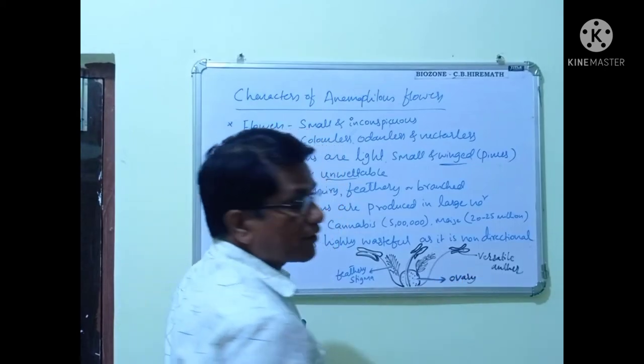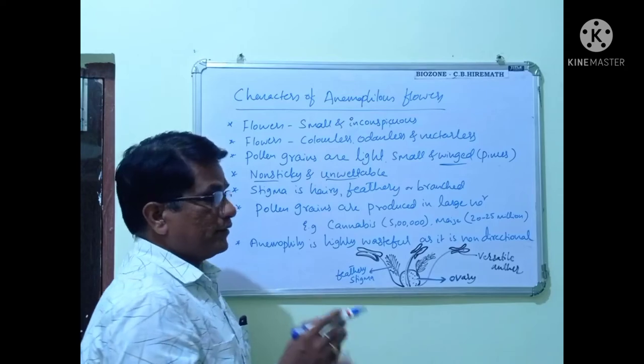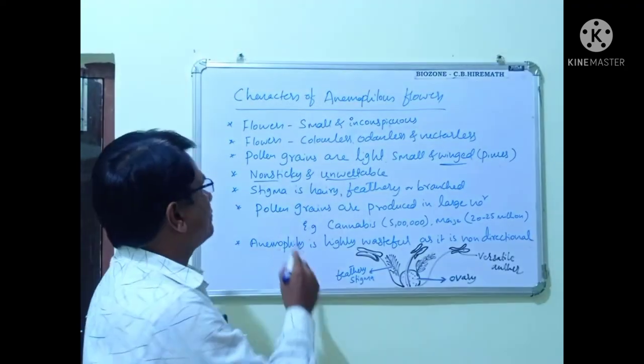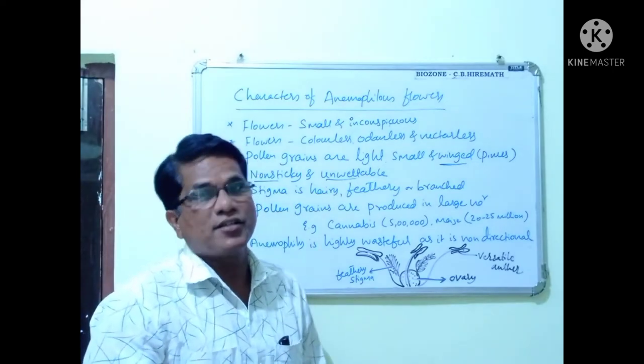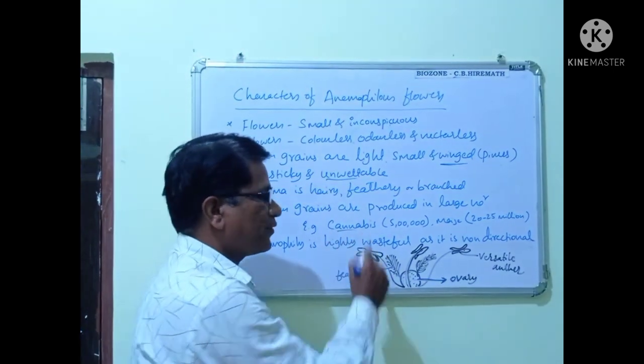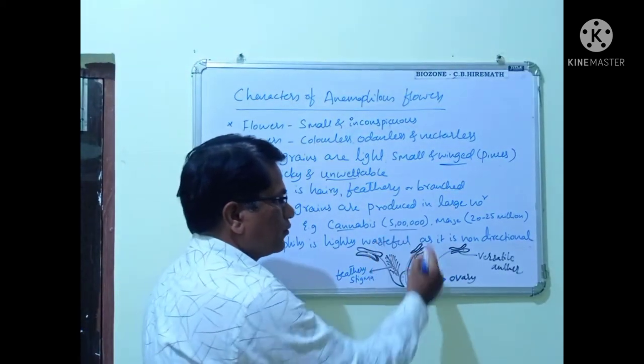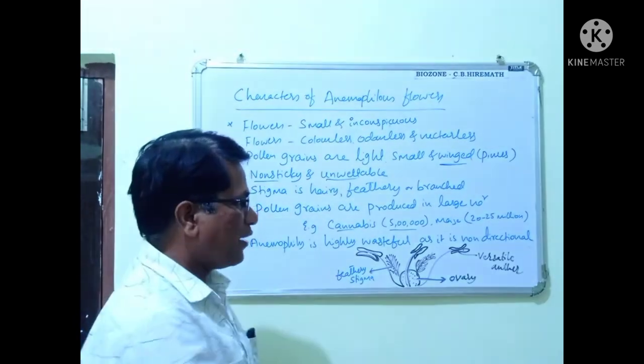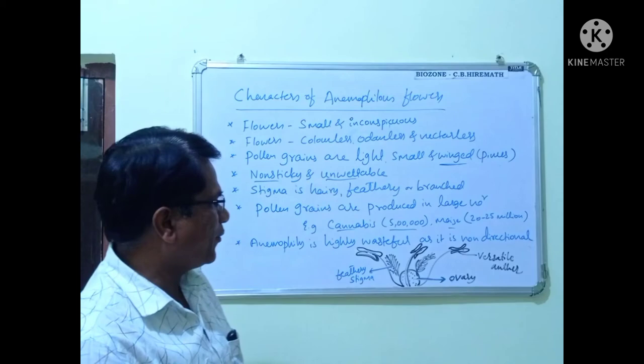They may be branched. Pollen grains are produced in large numbers. Two examples I have mentioned here: one is Cannabis, this plant produces five lakh pollen grains; likewise, maize plant produces 20 to 25 million pollen grains.